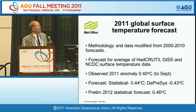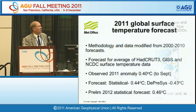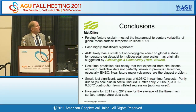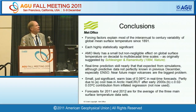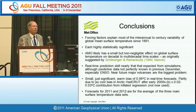For the 2011 forecast — now for the average of the three data sets — the observed anomaly to October was 0.41, and the forecasts are pretty close. That's the dynamical forecast method and the statistical method. In conclusion: these forcing factors explain most of the interannual to century variability of global mean temperature; each is highly statistically significant; the AMO almost certainly has an effect, as originally suggested by Schlesinger and Raman Kutty. Real-time prediction skill is close to that expected from simulations, forecasts for 2011 and 2012 are for the average of the three data sets. Thank you.